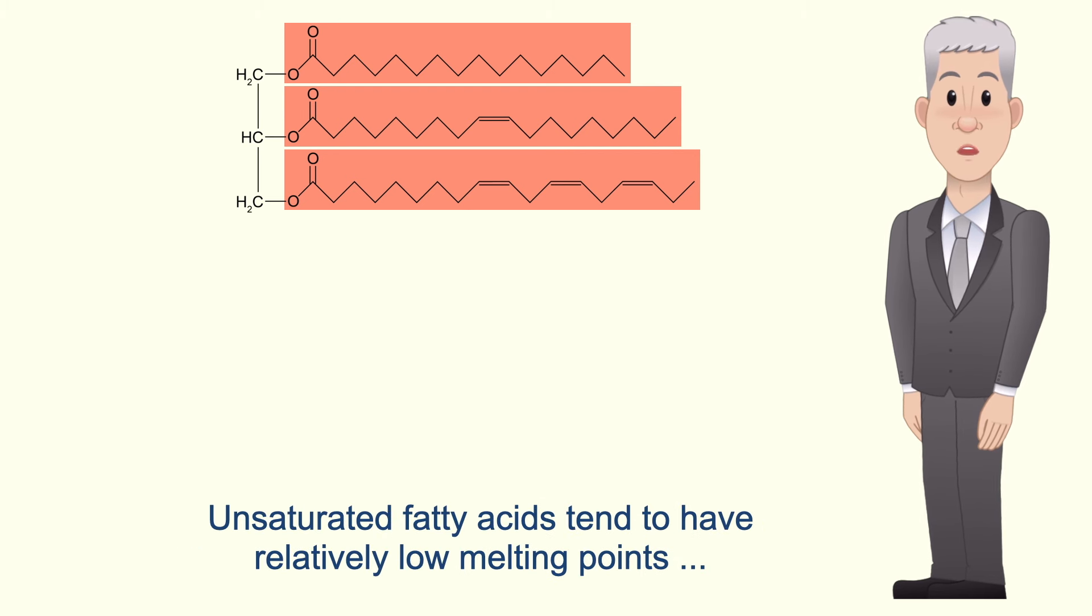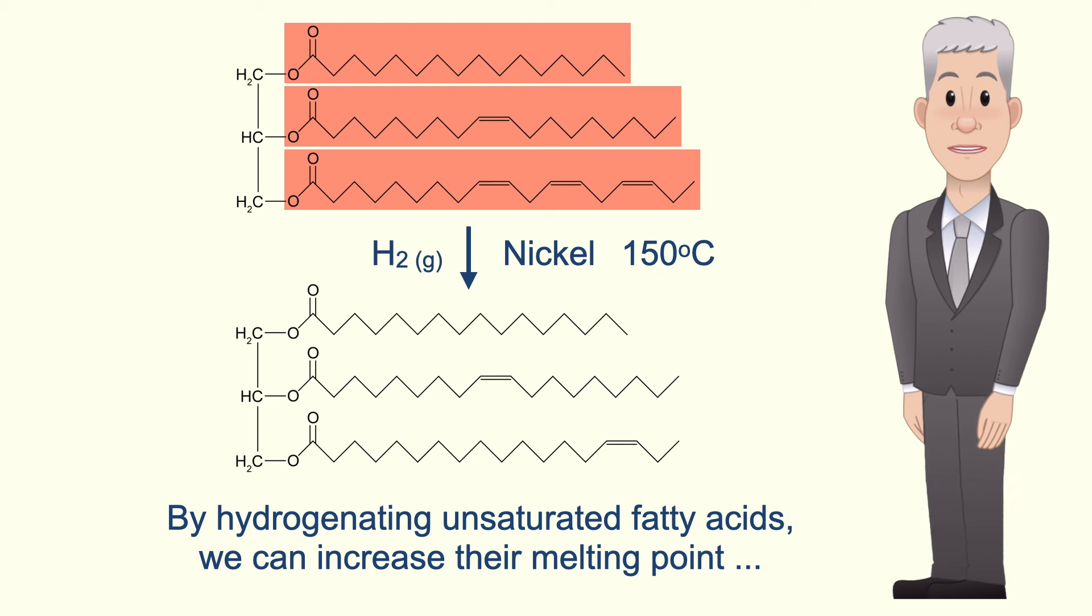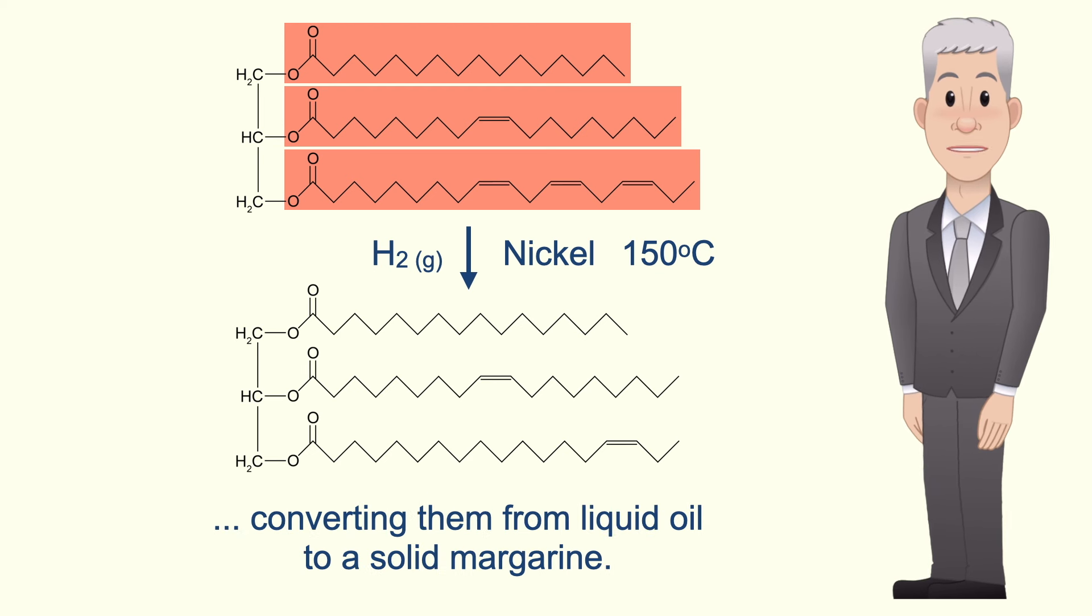Unsaturated fatty acids tend to have relatively low melting points, which is why vegetable oil is a liquid at room temperature. By hydrogenating unsaturated fatty acids, we can increase the melting point, converting them from liquid oil to a solid margarine.